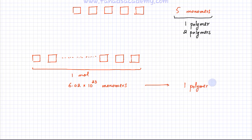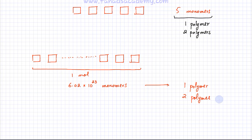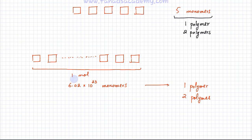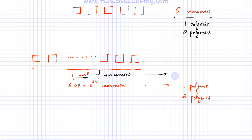Or it could also happen that half of them join together and the other half join together separately, forming two polymers. Whatever happens, the number of polymers is always going to be less than the number of monomers, because the monomers are joining together and reducing in count. So if you have one mole of monomers, the amount of polymers formed would always be less than one mole.